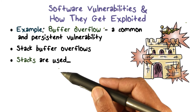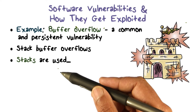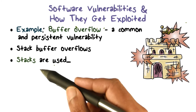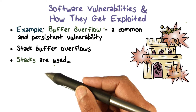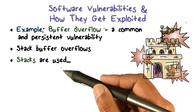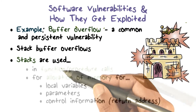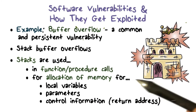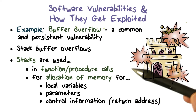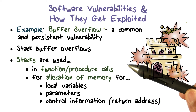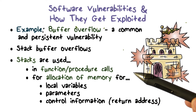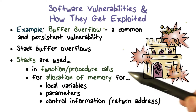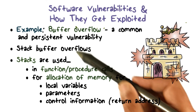The stack frame essentially gives us the scratch pad, or the memory, that we're going to need for the execution of a function. It's created when the function is called and discarded when the function finishes and returns. Part of the stack frame allocates space for local variables that are used by the code defined by the function.